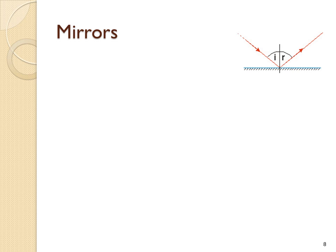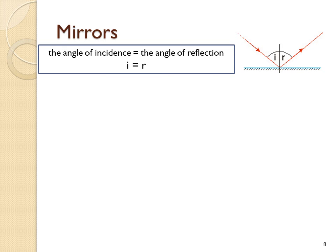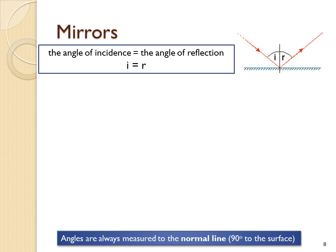Mirrors will reflect light according to the law of reflection. That is that the angle of incidence is equal to the angle of reflection. You measure angles to the normal line, and a normal line is drawn at 90 degrees to the surface of the mirror.